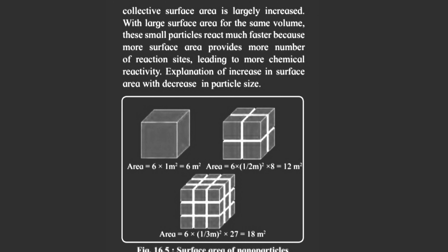Explanation of increasing surface area with decreasing particle size: first cube is bulk material, then bulk material se nanoparticles mein convert ho raha hai. Jaise bulk material nanoparticles mein convert ho raha, waise uska surface area increase ho raha.